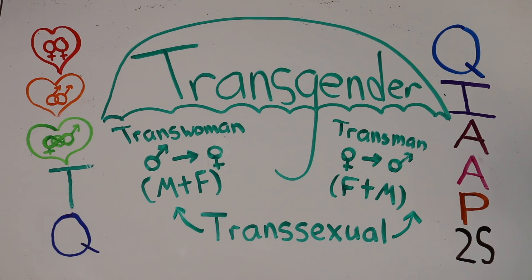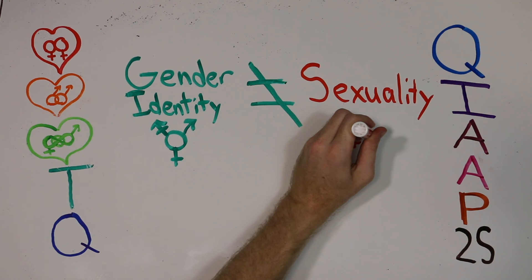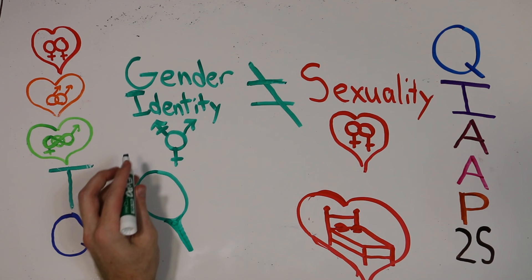Please keep in mind that gender and sexuality are not the same. A phrase to help remember this distinction is: sexual orientation is who you go to bed with, and gender identity is who you go to bed as.